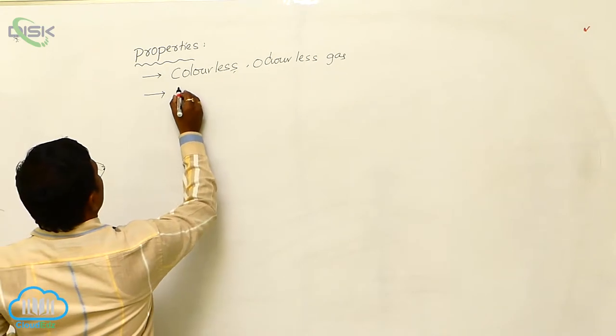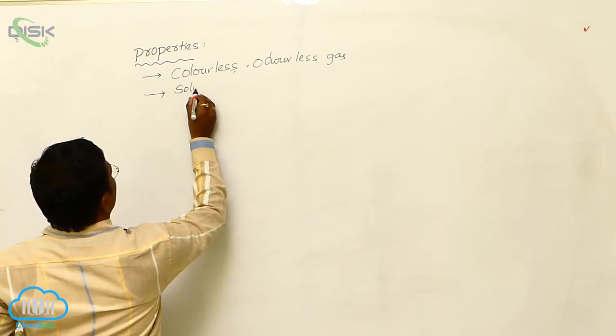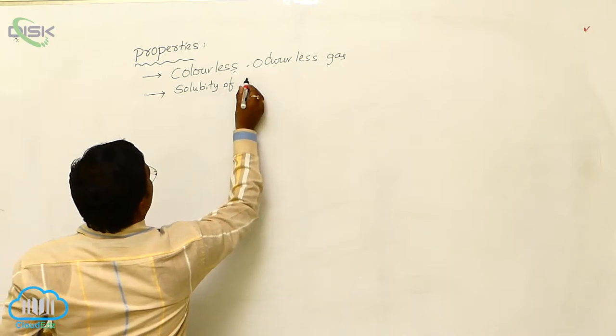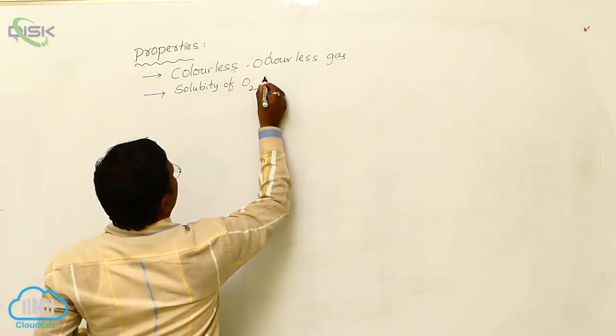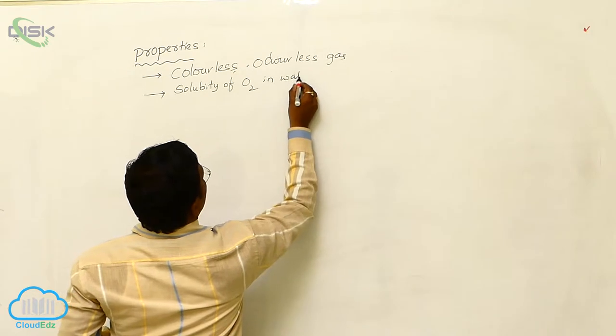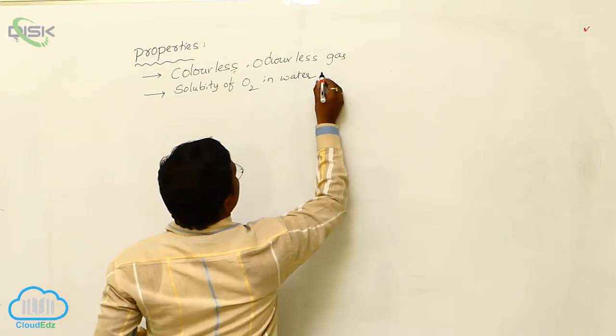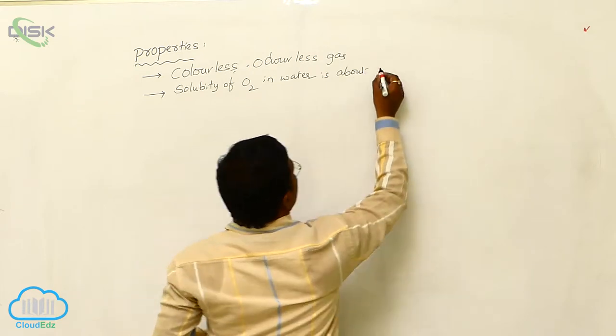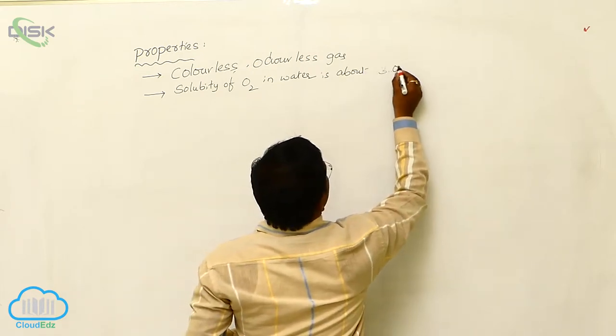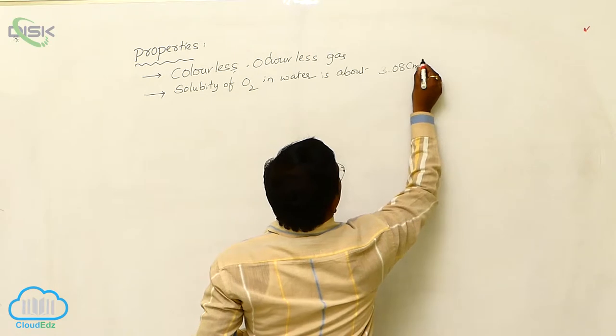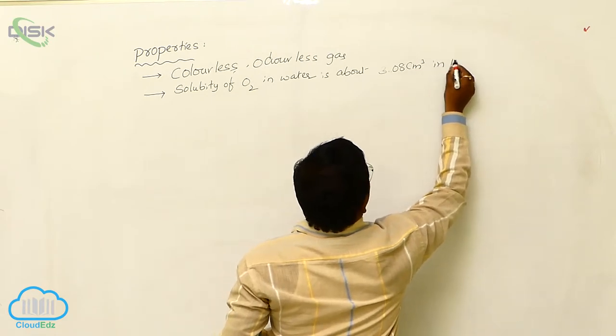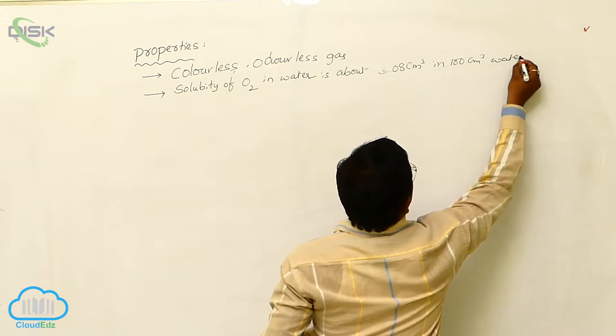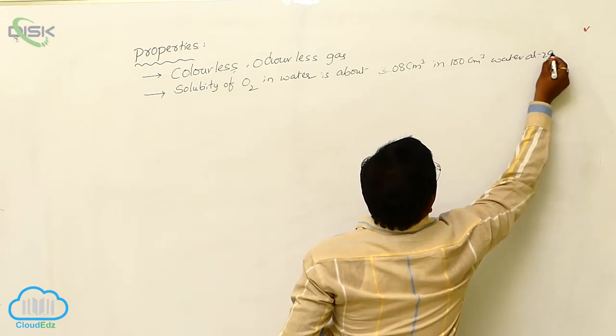Similarly, dioxygen will have solubility in water. Solubility of dioxygen in water is about 3.08 centimeter cube in 100 centimeter cube of water at 293 Kelvin.